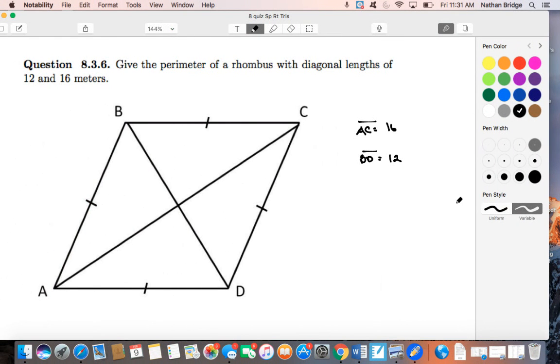All right, another video for you guys to get ready for the Chapter 8 quiz. Question 8.3.6, give the perimeter of a rhombus with diagonal lengths of 12 and 16 meters. And you can see that I've already identified which diagonals are which. I gave AC, it just looks longer of the two. So I labeled AC as the 16 and BD as the 12.